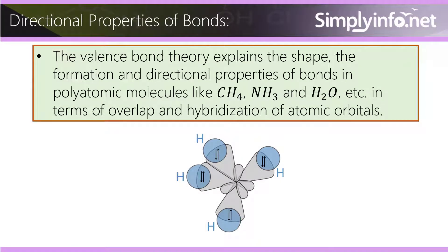Directional Properties of Bonds: Valence Bond Theory explains the shape, the formation, and directional properties of bonds in polyatomic molecules like CH4, NH3, and H2O, in terms of overlap and hybridization of atomic orbitals.